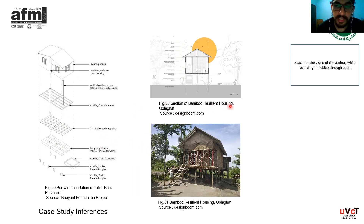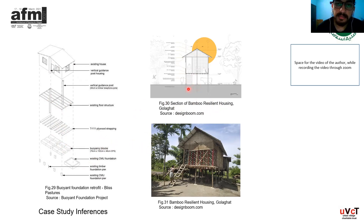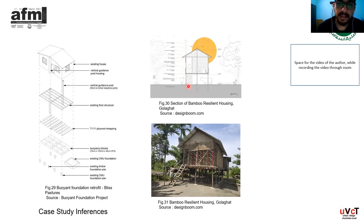A section of a bamboo resilient housing by the organization SEEDS in Golaghat, Assam shows stilt columns encased in rubber with footings encased in concrete. The rest is a basic bamboo structure using all vernacular methods — the torja and bamboo matting. A bamboo truss supports the roof covering, lateral forces are handled by cross bracing, and the design is flexible, allowing shifting of floors during floods.